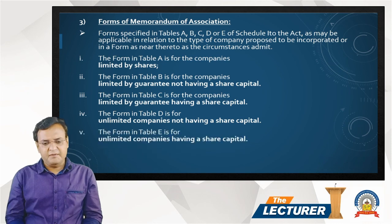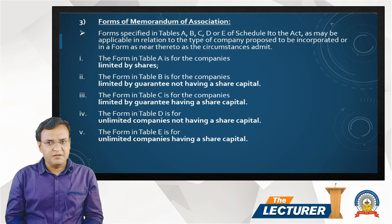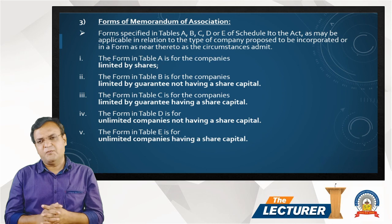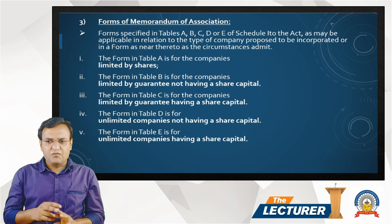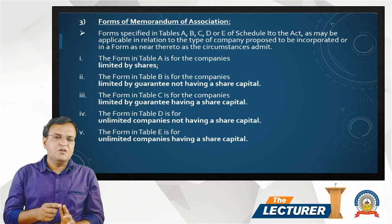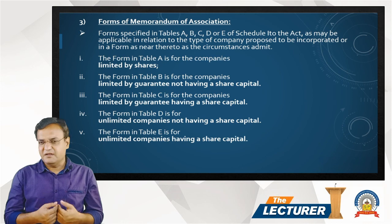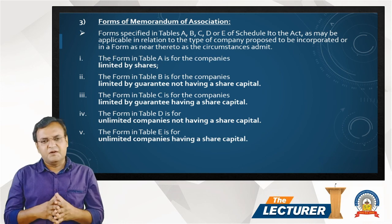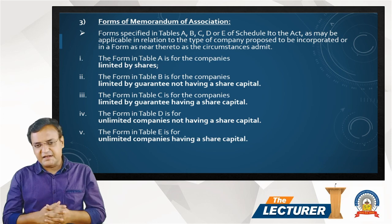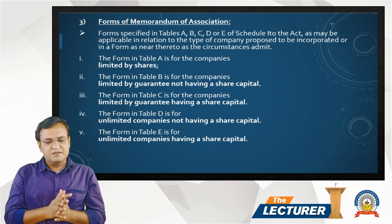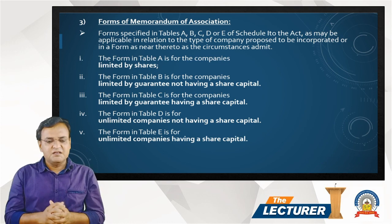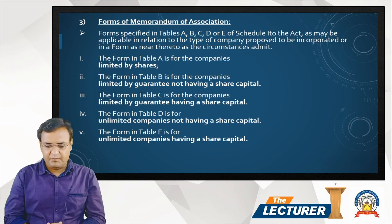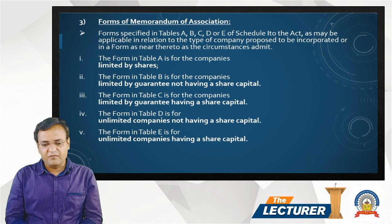The last form prescribed is Table E, which is applicable for an unlimited company having share capital. So these are the formats given for the memorandum of association in the Companies Act: Table A for company limited by shares, Table B for company limited by guarantee without share capital, Table C for company limited by guarantee with share capital, Table D for unlimited company without share capital, and Table E for unlimited company with share capital.